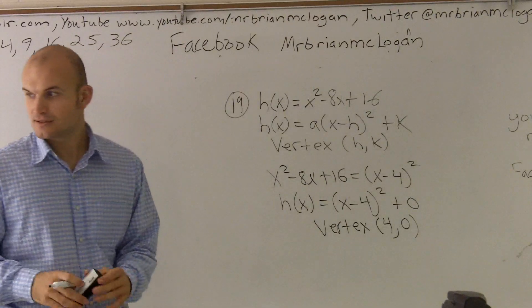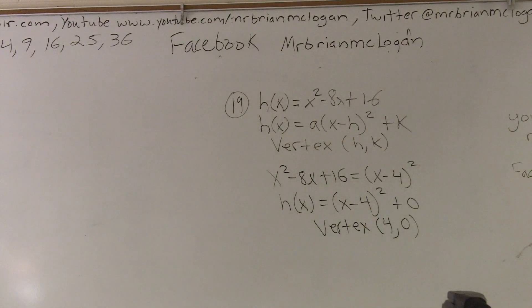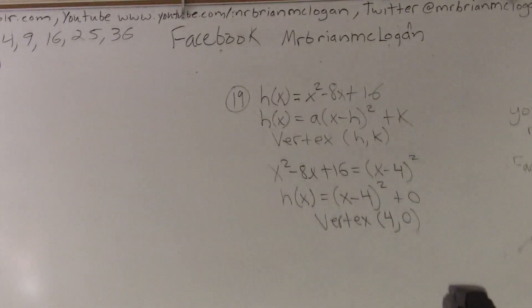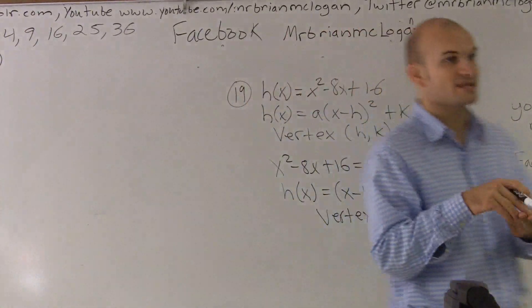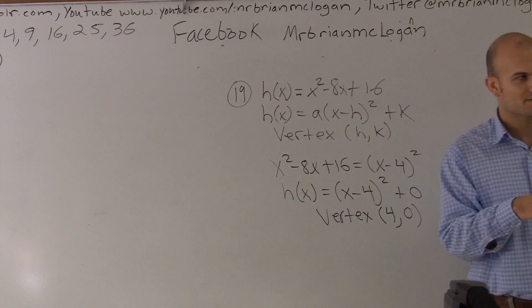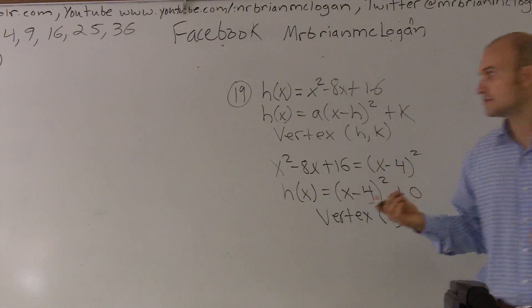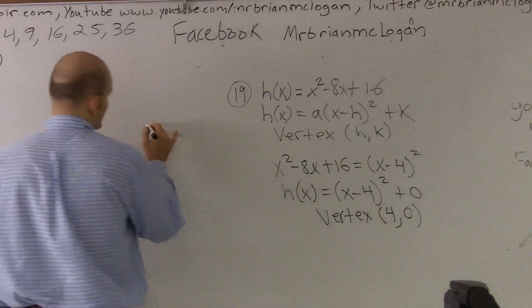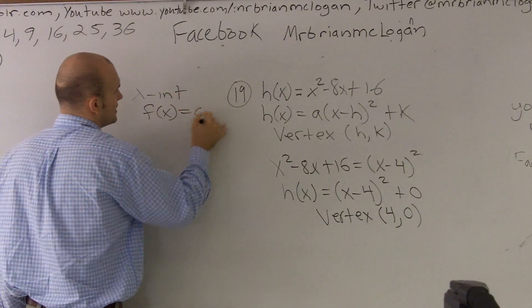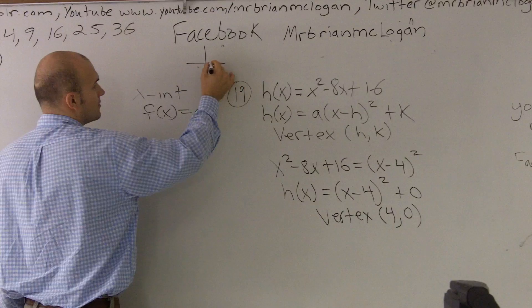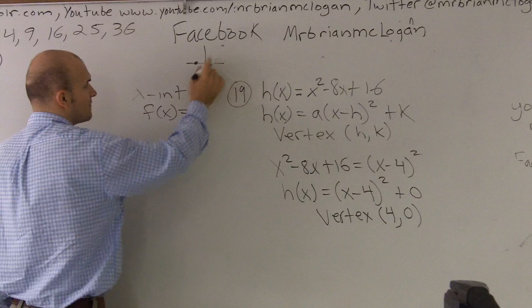So I'm going to erase this. Hopefully, you guys got it written down. So now the next thing he's asking us to do is to find the x-intercepts before we can graph it. So to find the x-intercepts, we need to find what are the values of x when our function is equal to 0. So we're going to say x-intercepts are when f(x) equals 0. We have a 0 value for our output value.